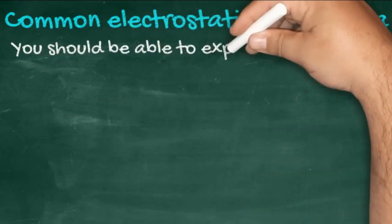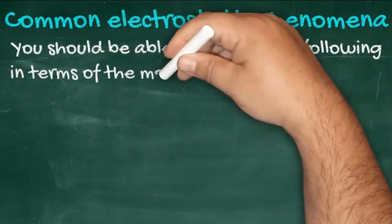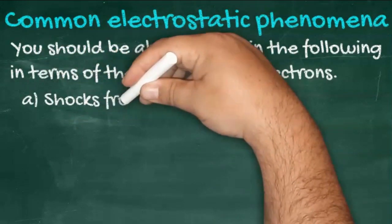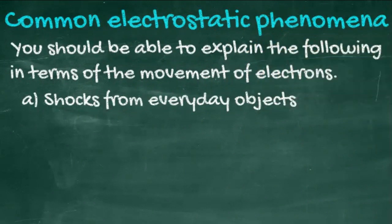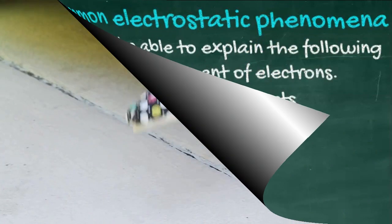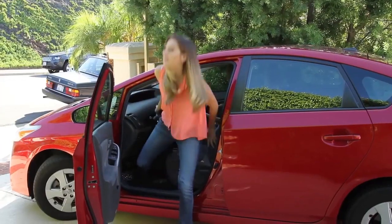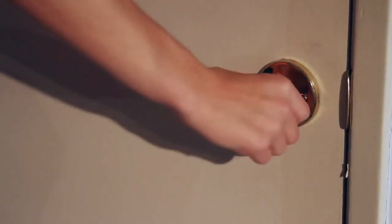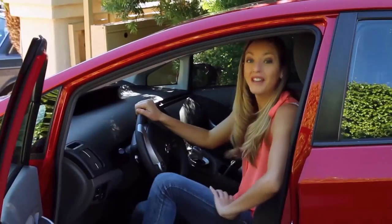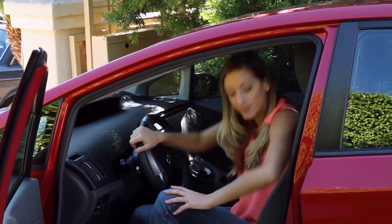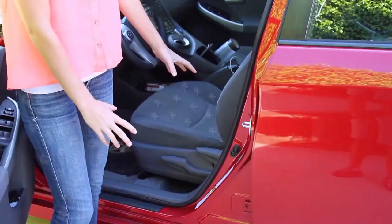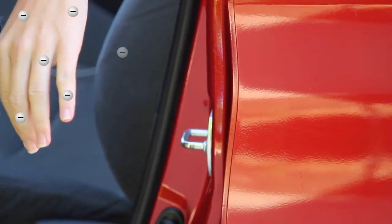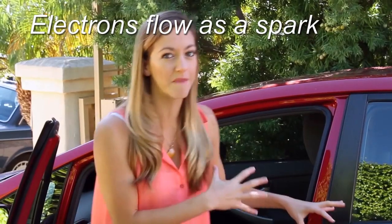You should be able to explain the following in terms of the movement of electrons. First of all, shocks from everyday objects, such as car doors or door handles. Why do you get shocked sometimes when you get out of your car, or when you touch a doorknob, or when you take off a sweater and hug someone? When you get out of the car, you slide across the seat and both you and the seat become charged. Some of that charge will leave your body into the air, but if the air is cold and dry enough and you touch the metal soon enough, that charge will quickly leave your body into the metal — and you will feel and hear it as a shock.